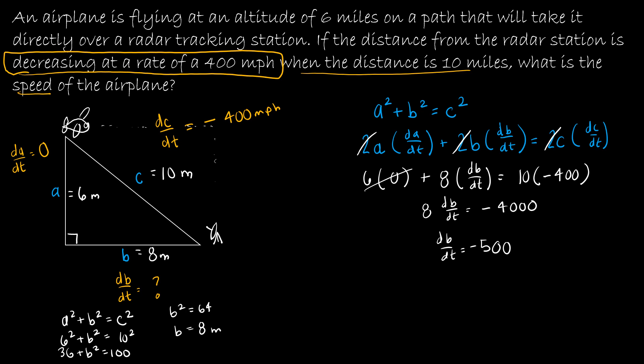Now you want to pay attention to units of measure. We're talking about speed, so it's miles per hour. Or you can look at the 4000, which is miles per hour, times 10 miles, giving miles squared per hour, divided by 8 miles. Therefore, our result is in miles per hour.